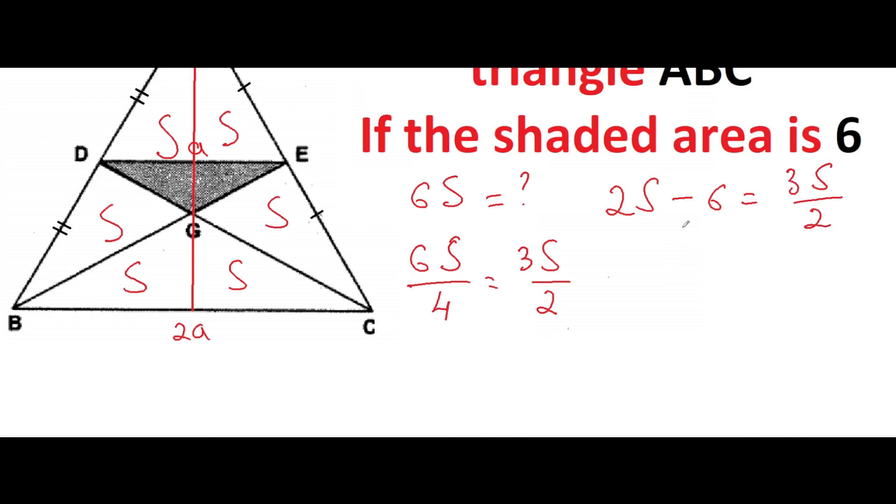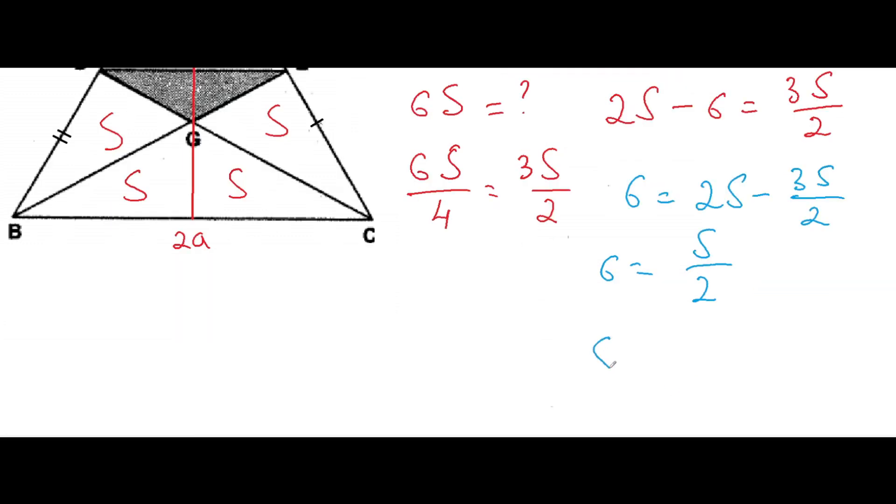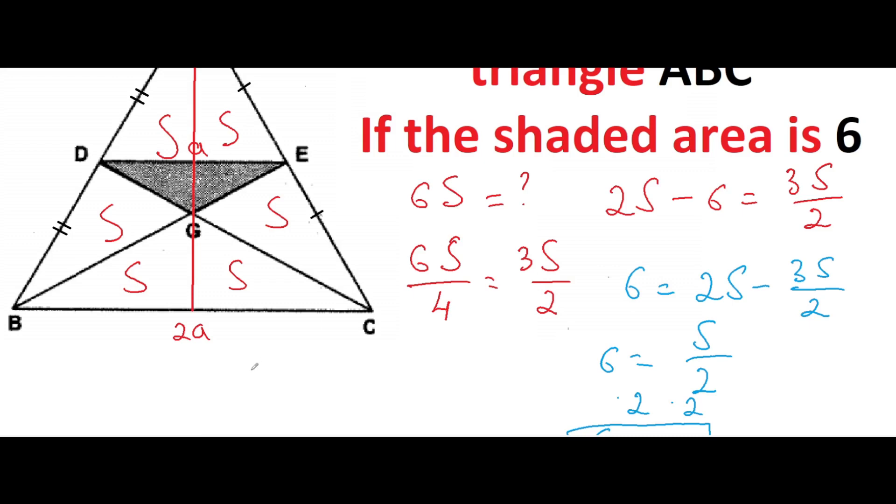We can subtract 2S from both sides. We get 6 equals 2S minus 3S over 2, which equals S over 2. So if we multiply both sides by 2, we get S equals 12.